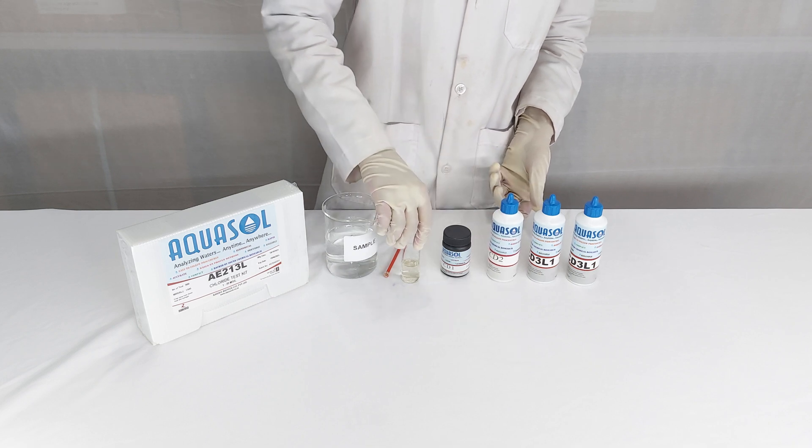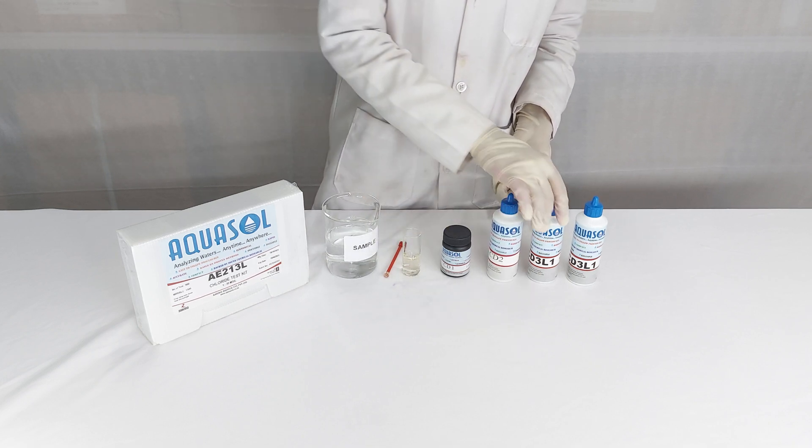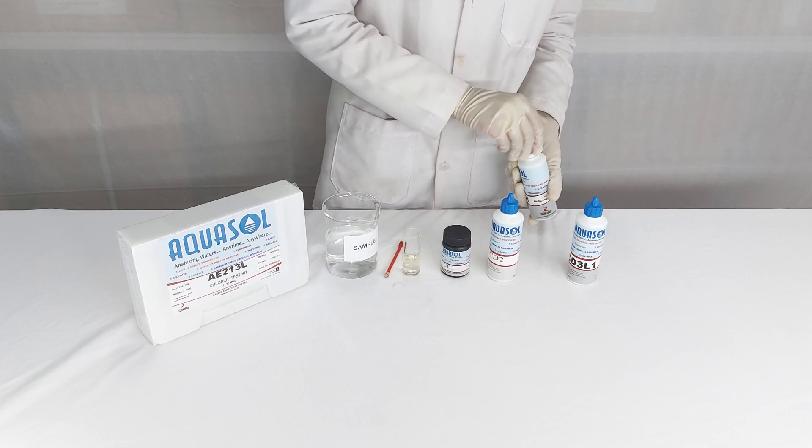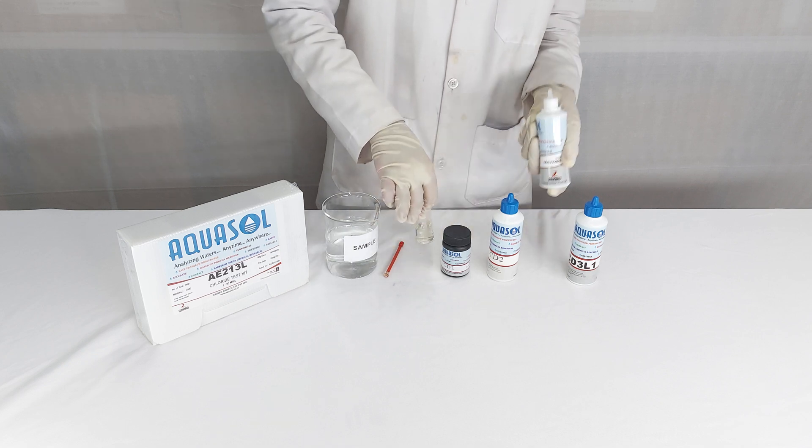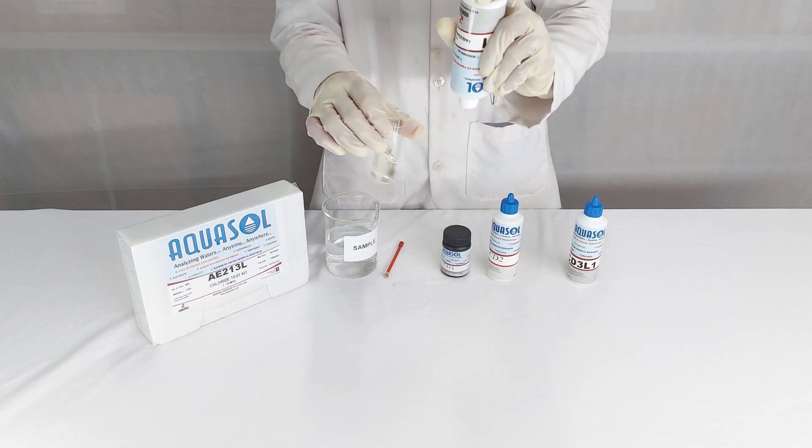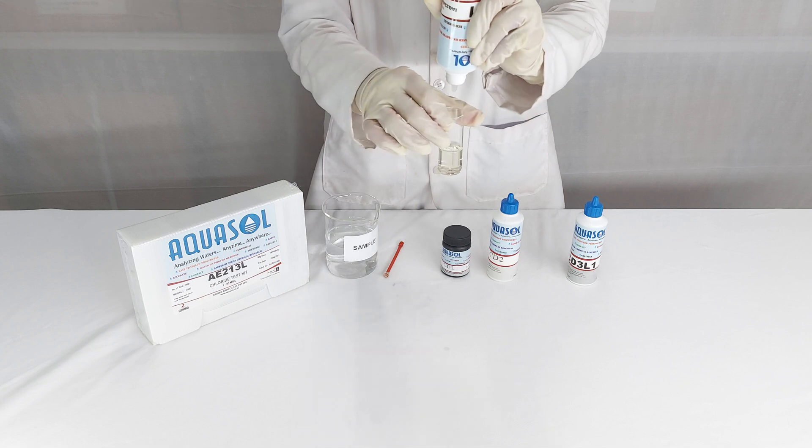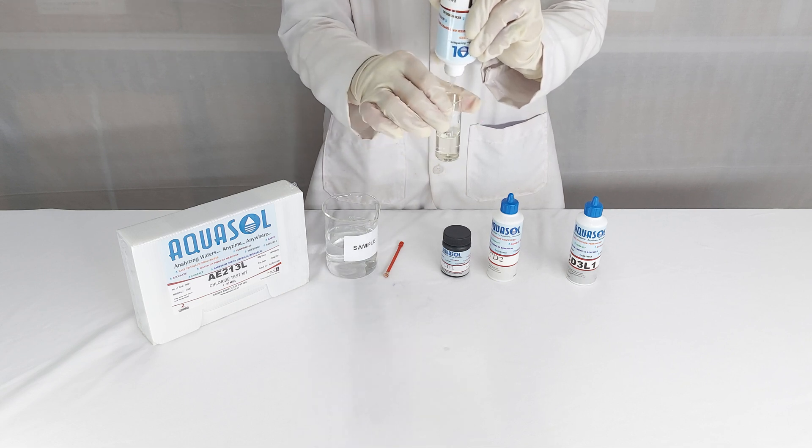To estimate the value of chloride, we will add CD3L1 reagent dropwise. Count the number of drops while mixing until the color changes from yellow to violet.